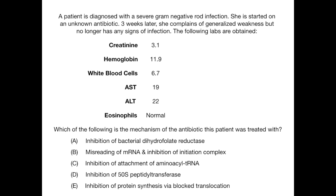This is a classic test question where you need to know one bit of information about a topic and connect it to another. First, let's identify which antibiotic the question is hinting at. The patient was treated for a gram-negative rod infection — that's the first key piece of information, since knowing what bugs each antibiotic treats helps eliminate incorrect answers.